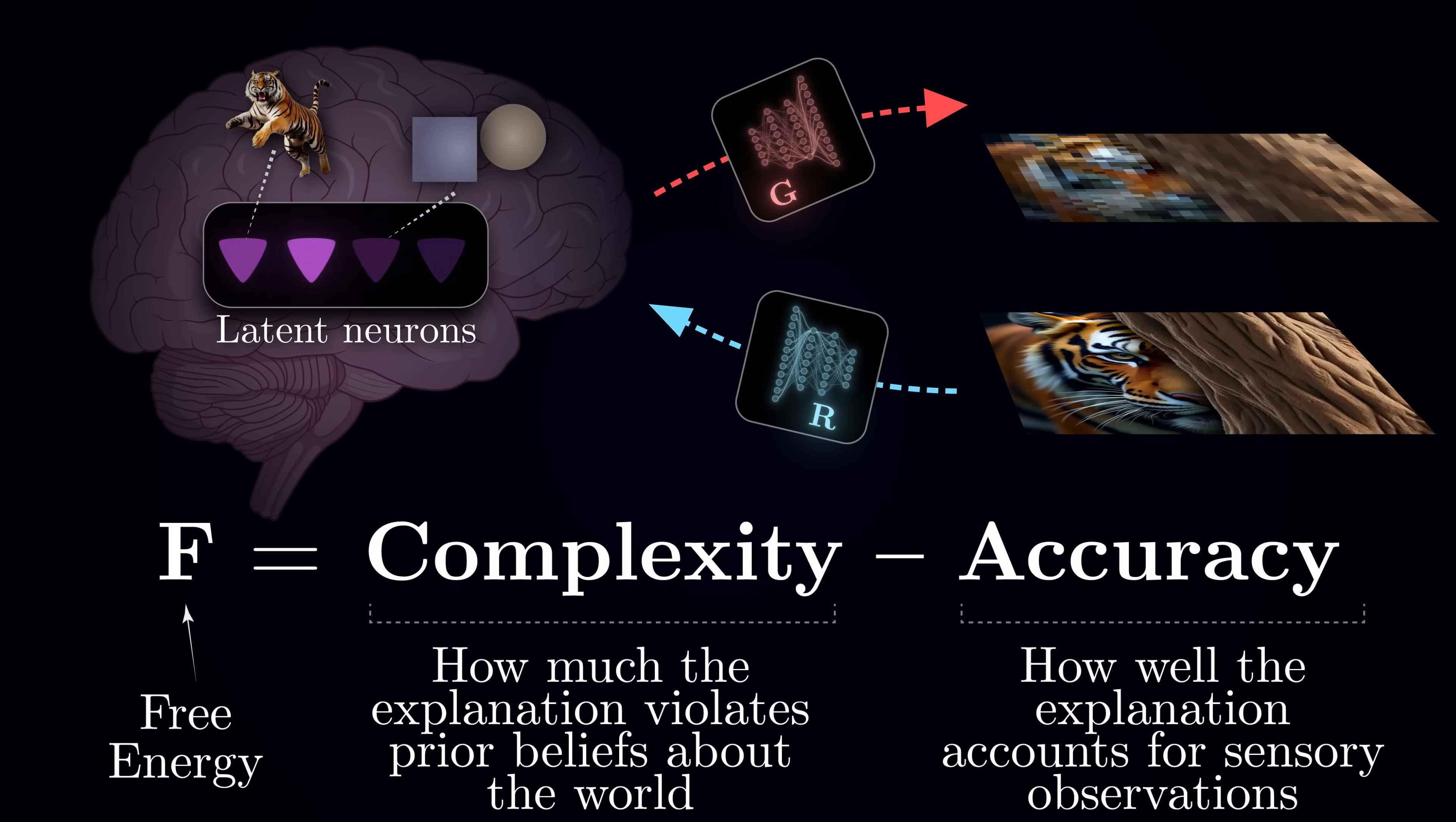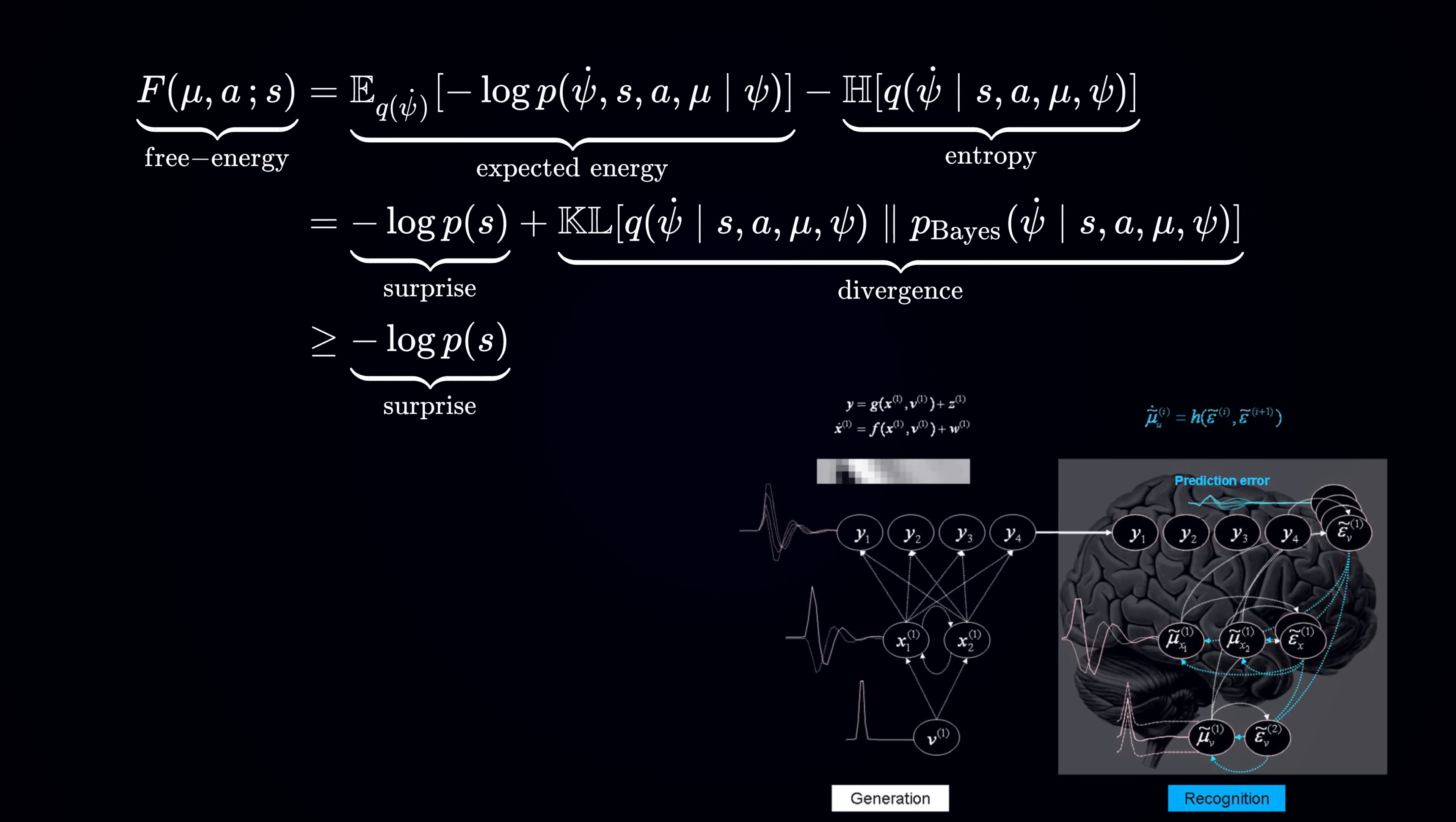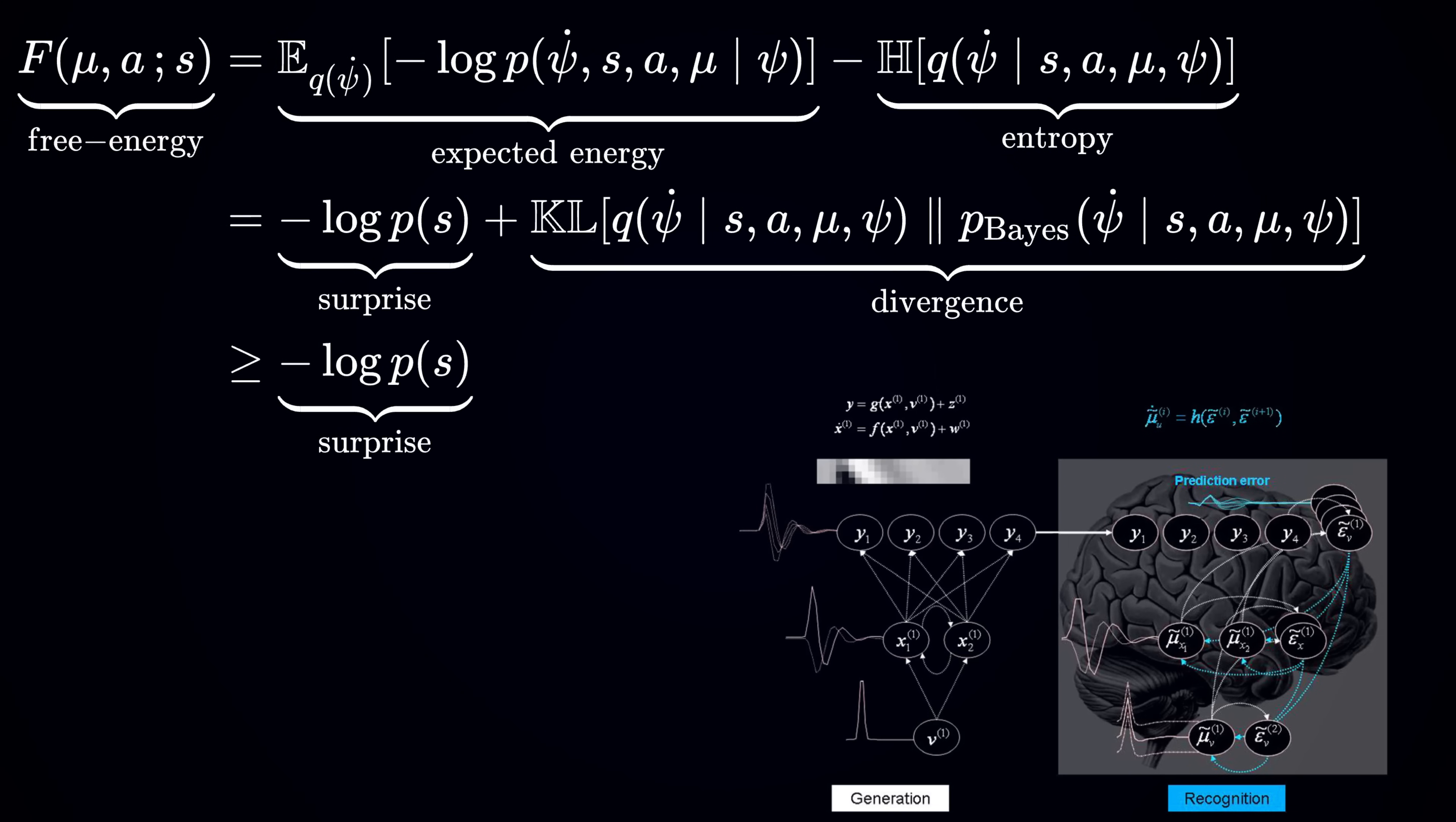Of course, we've only scratched the surface of this fascinating theory. While I chose to keep this explanation conceptual, focusing on intuitive understanding rather than mathematical formalism, there is another layer of beauty to discover. The mathematics behind the free energy principle, although initially daunting, actually reveals an elegant framework that ties these ideas together. In future videos, we'll explore this deeper mathematical foundation and see how it connects to modern machine learning, allowing us to build artificial systems that, like our own brains, can perceive, predict, and develop their own models of the world.